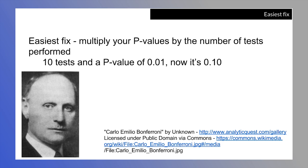The easiest way to execute a Bonferroni correction is if you have a bunch of p-values, simply multiply your p-values by the number of tests that you're performing. So for example, if you perform 10 tests and one of the p-values is 0.01, then that p-value is now 0.10, because you've multiplied it by 10.